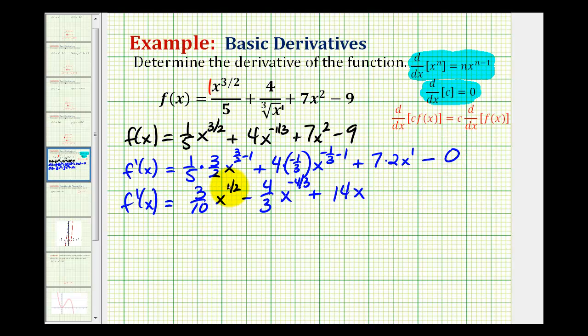Now let's go ahead and convert x to the one-half back to a radical, and the same here. So f prime of x is going to be equal to three square root x, all over ten.